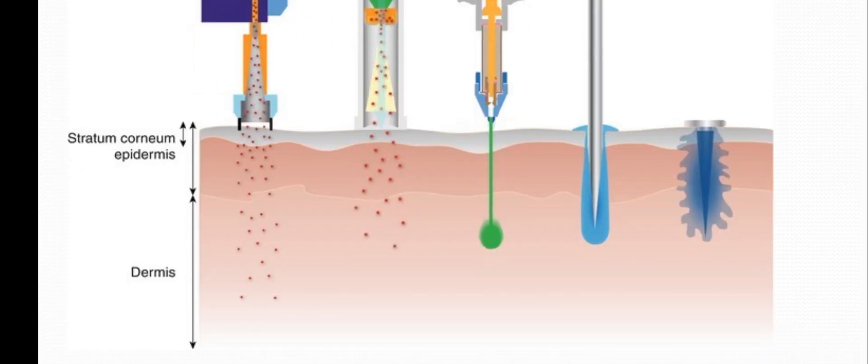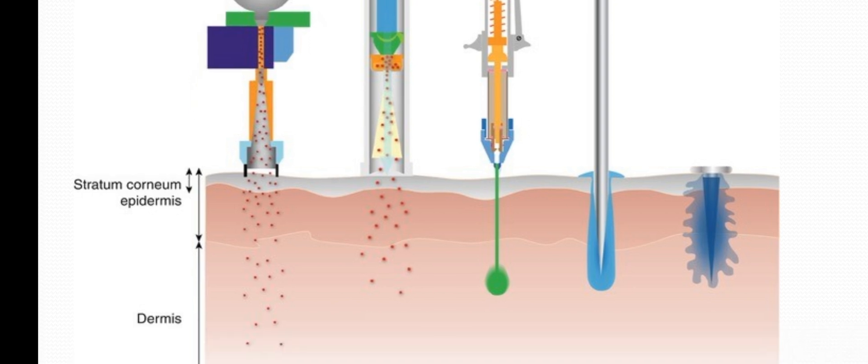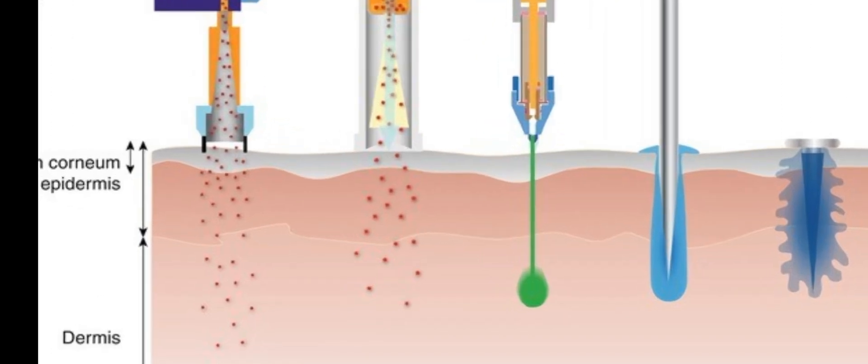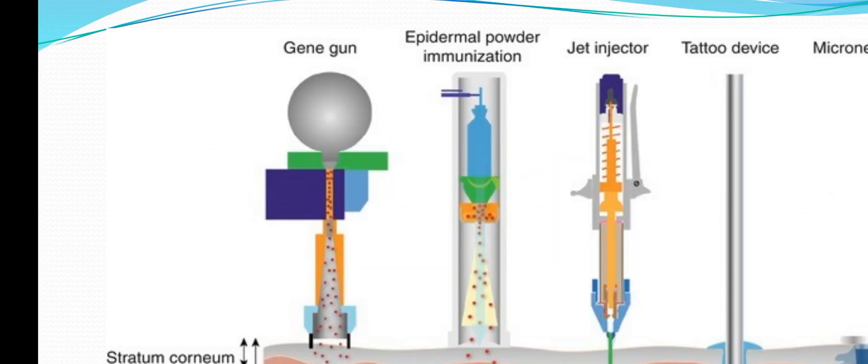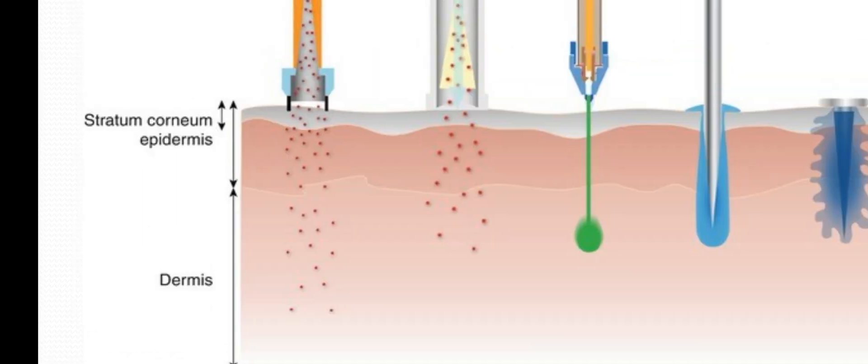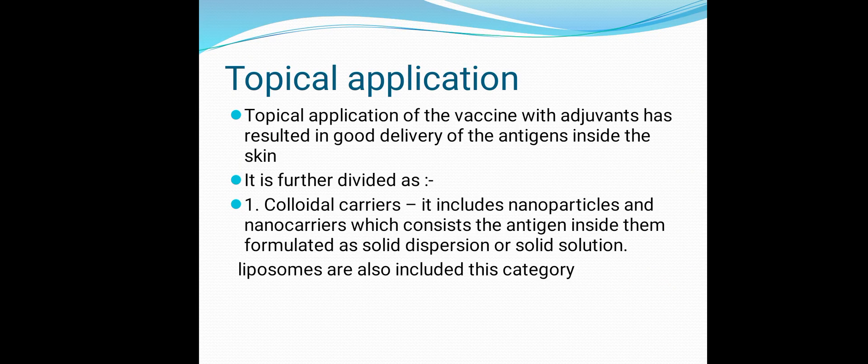The general concept is to show how the skin is penetrated through powder immunization. In epidermal powder immunization, absorption of the powder drug occurs in various directions, so the response is much faster than with a needle. Third is topical application — applying vaccines with adjuvants results in good delivery of antigens inside the skin. Adjuvants are compounds that increase drug absorption, like oil, and include creams, gels, and ointments, which are absorbed easily through the skin.